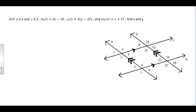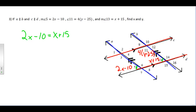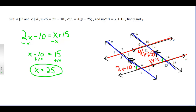Let's try one more problem. We have two sets of parallel lines: A and B are parallel, as are C and D. Angle 5 is 2x minus 10, angle 11 is 4 times the quantity y minus 25, and angle 13 is x plus 15. Starting with angles 5 and 13, which are corresponding angles, we set them equal: 2x minus 10 equals x plus 15. Subtracting x and adding 10, we get x equals 25. Checking: angle 5 becomes 40 degrees and angle 13 becomes 40 degrees — correct.